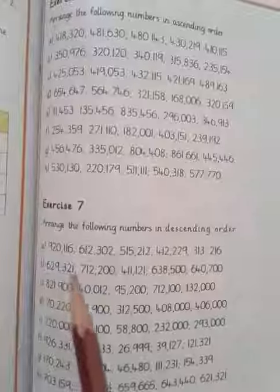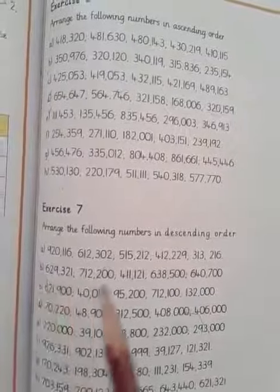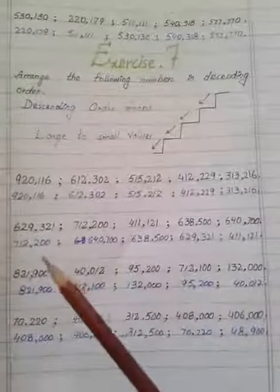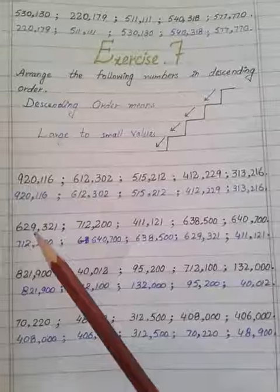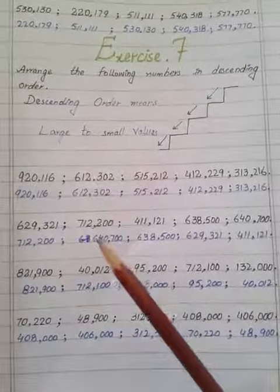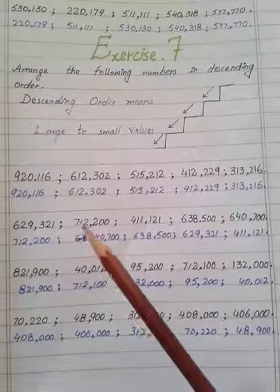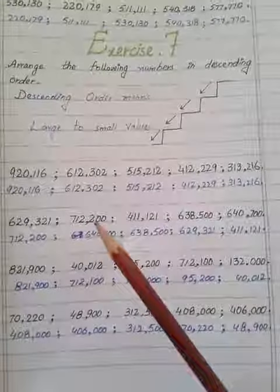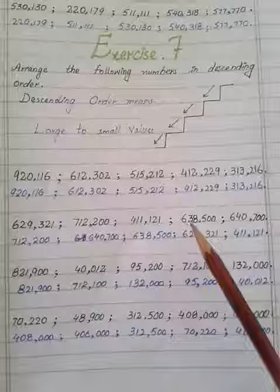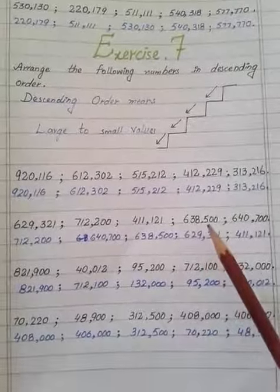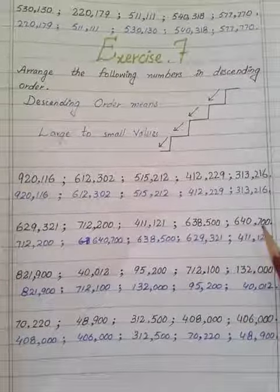Now we start with part B. The numbers are: 629,321; 712,200; 411,121; 638,500; 640,700.